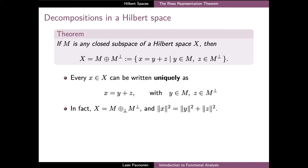The notation of the plus with a circle around it denotes the so-called direct sum of these two subspaces, which is defined as the set of all elements which can be obtained as a sum of two elements, one from each subspace. The circle around the plus gives us further information that this is indeed a direct sum, meaning that the intersection of the two subspaces contains only the zero element. This triviality of the intersection also implies that every element x can be written as a sum y plus zeta with uniquely determined elements y from M and zeta from its orthogonal complement.